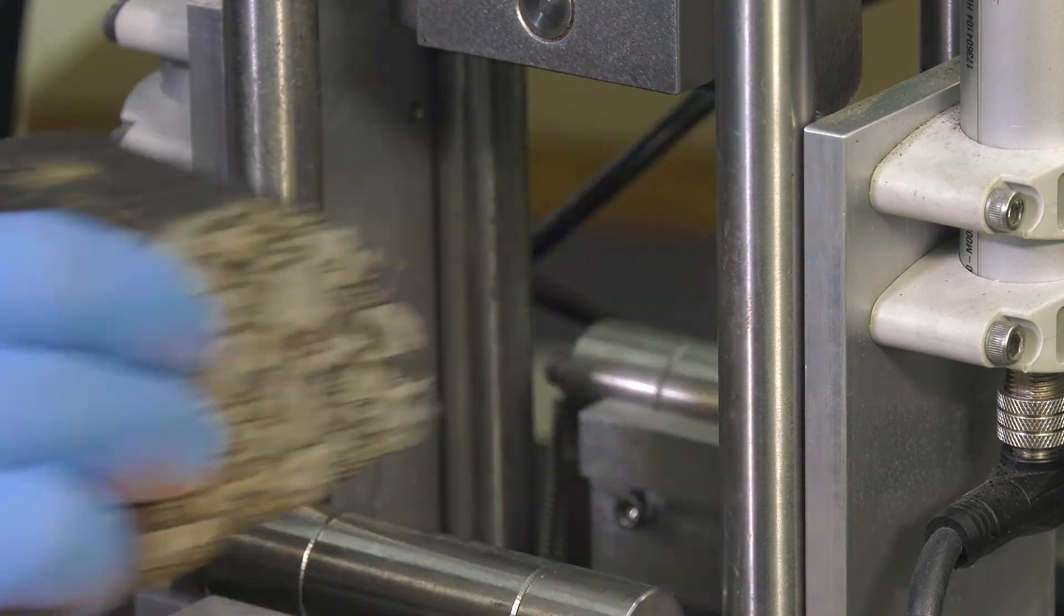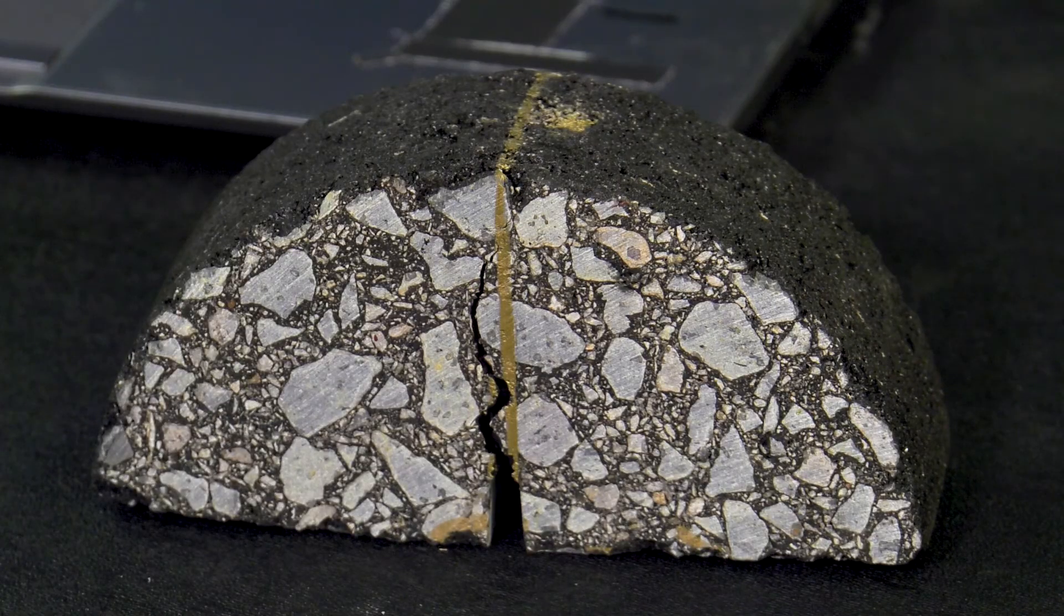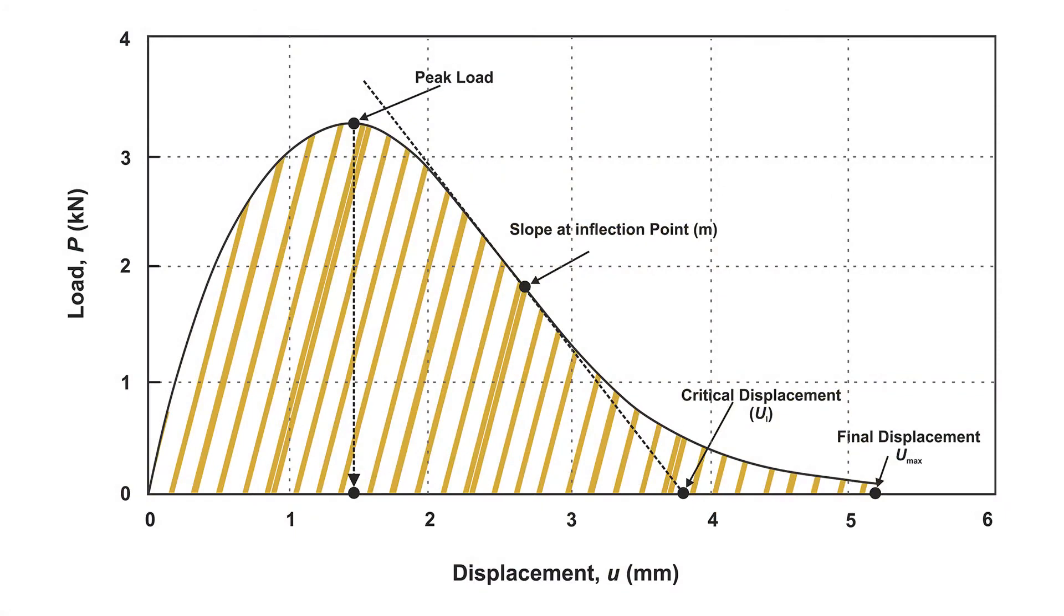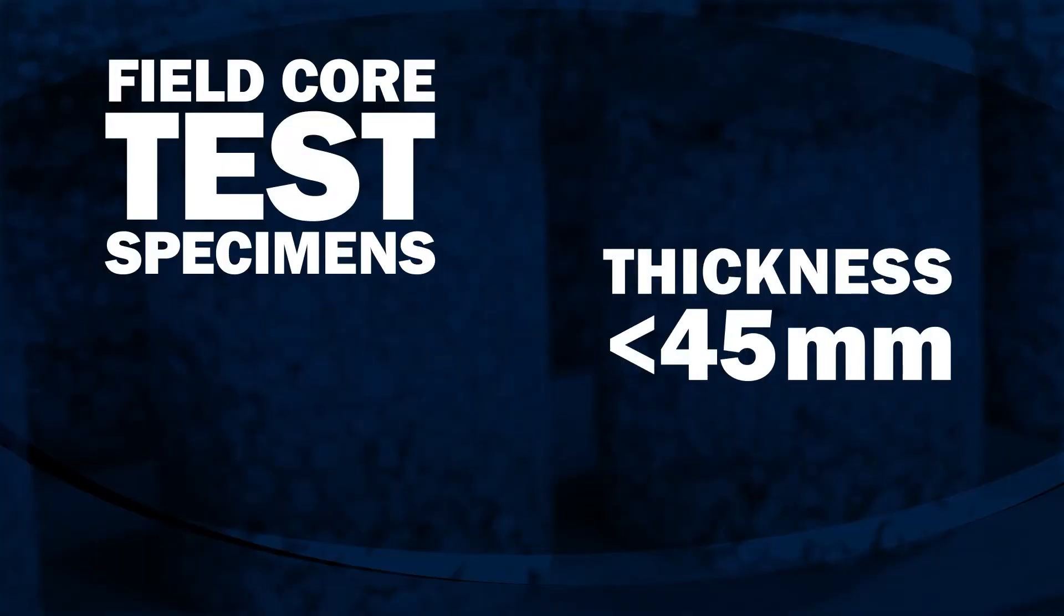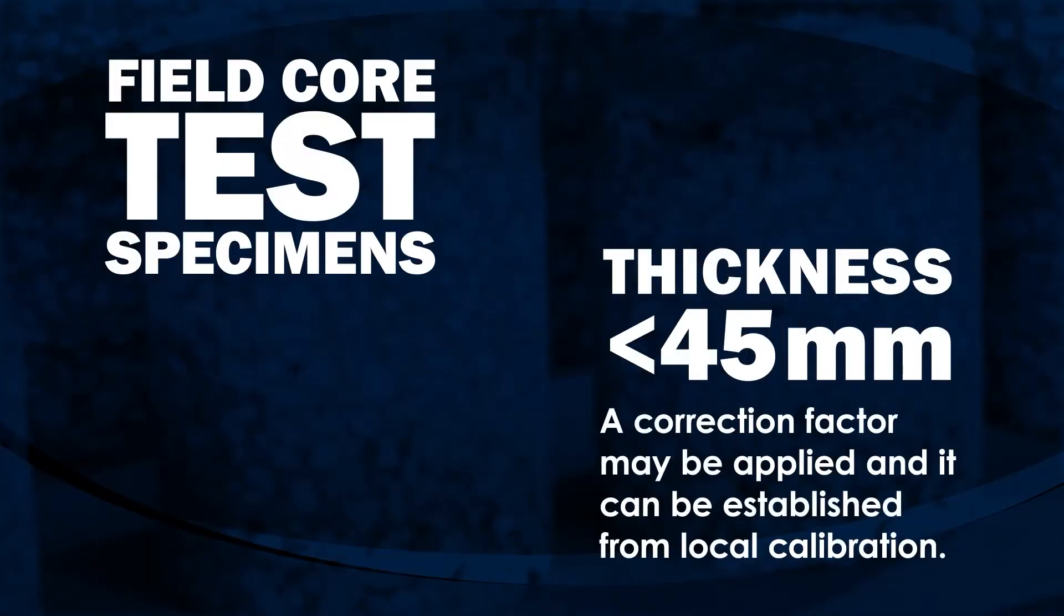When the test is complete, remove the sample. Analyze the test data and calculate the Flexibility Index, or FI, as described in the standard. For the field core test specimens with thickness less than 45 millimeters, a correction factor may be applied. It can also be established from local calibration.